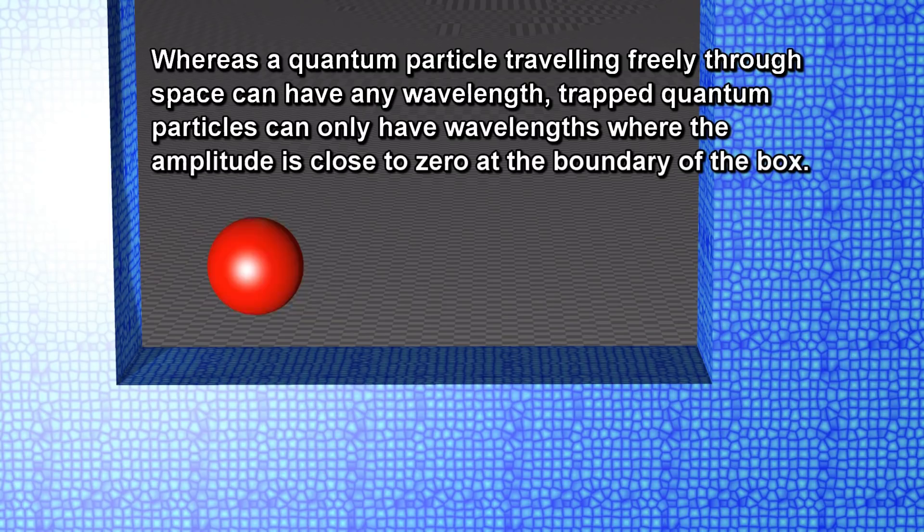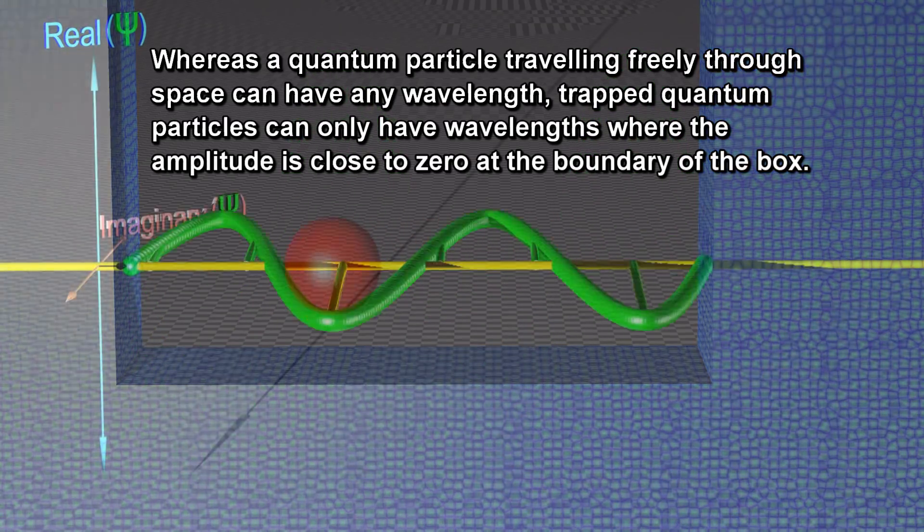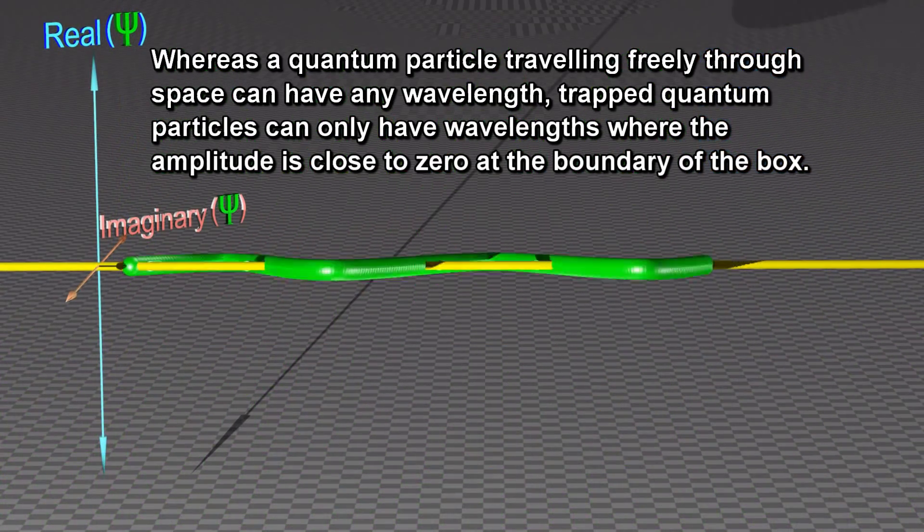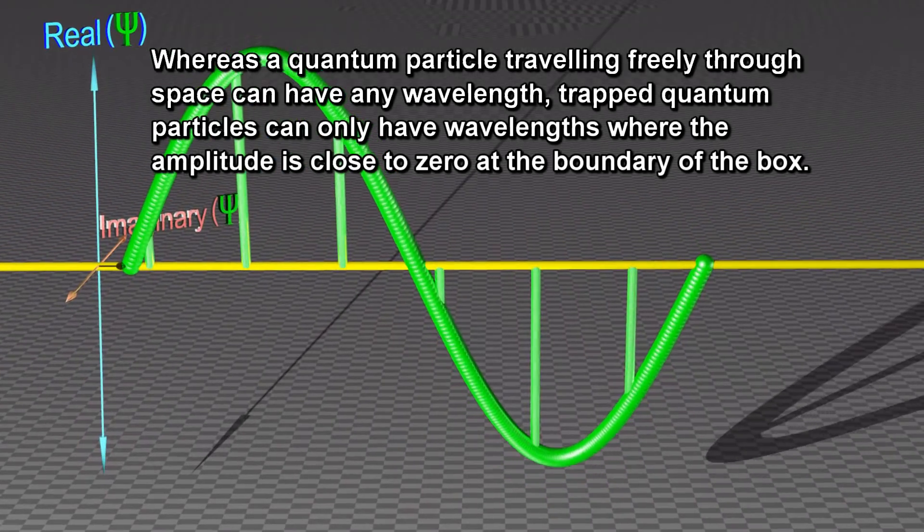Whereas a quantum particle traveling freely through space can have any wavelength, trapped quantum particles can only have wavelengths where the amplitude is close to zero at the boundary of the box.